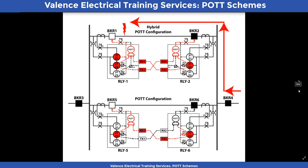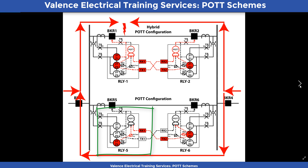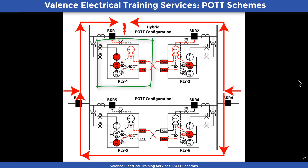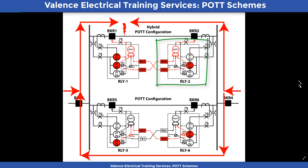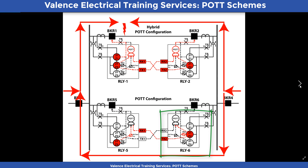This weakness is inherent in any overreaching communication-assisted trip scheme, and most schemes add additional logic to minimize this problem. In the revised scheme, Zone 3 is looking in the reverse direction and is connected to a new dropout timer, which is connected to a NOT symbol on the POT scheme. All relays detect the same zones when all breakers are closed. Relay 1 detects a Zone 1 pickup and trips instantaneously, and also sends a POT permissive signal to Relay 2 because it gets a Zone 2 pickup. Relay 2 should trip on POT after a short communication delay because it detects a Zone 2 pickup, is receiving POT permissive signals from Relay 1, and has not detected a Zone 3 pickup in the last five cycles. Meanwhile, Relay 5 detects a Zone 3 reverse fault and sends a blocking signal to its POT scheme, while Relay 6 detects a Zone 2 pickup and sends a POT permissive signal to Relay 5.